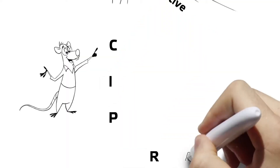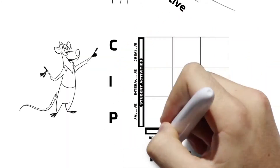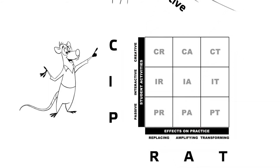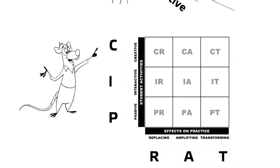PICRAT — a silly name, but a very useful framework — can be used to evaluate effective technology use for a particular learning activity. Now let's unpack this further so you can see how useful this actually is.